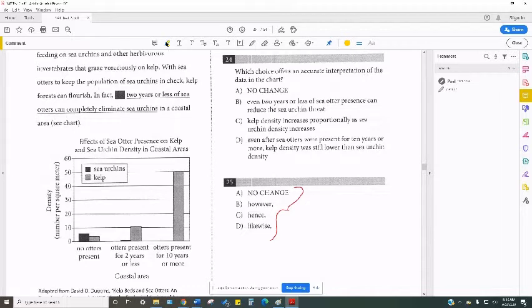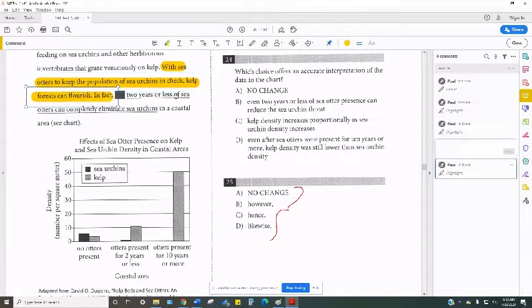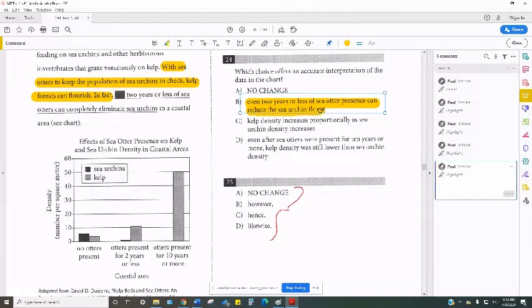So I'm going to read with number 24, B is the correct answer. I'm going to read with that in place, and then we're going to look for the correct answer for number 25. So it reads, with sea otters to help keep the population of sea urchins in check, kelp forests can flourish. In fact, even two years or less of sea otter presence can reduce sea urchin threat in coastal area.